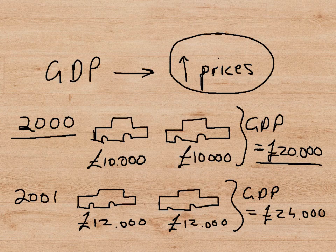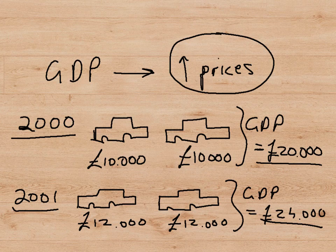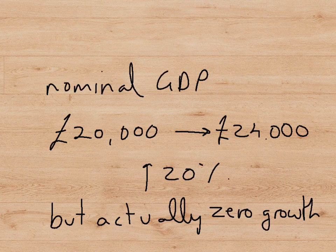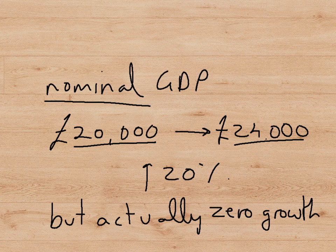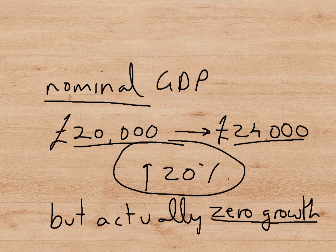Now, let's imagine that in the next year, 2001, this economy also produced just two cars. So the economy has not grown because it was producing two cars last year and two cars the following year. However, imagine that the price of these two cars rose to 12,000 pounds each rather than 10,000 pounds. Now the GDP is 24,000 pounds, and it looks as though the GDP of the country has increased — nominal GDP has gone from 20,000 to 24,000, an increase of 20%. But we know that the economy has actually shown zero growth because it's still making two cars, exactly what it was making a year ago.